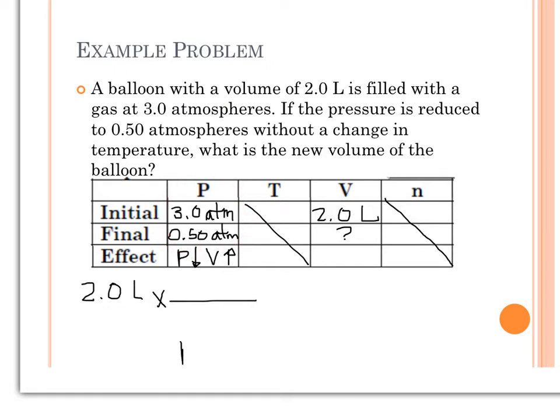Remember, we want, because pressure went down, we want a relationship that makes the volume go up. So we need a conversion factor that is bigger than one. Because if we multiply two by a fraction that's bigger than one, we're going to get a bigger volume.